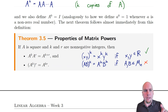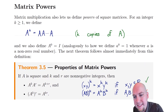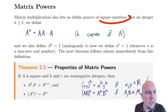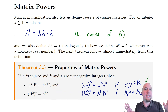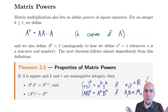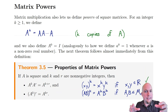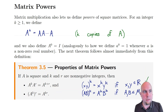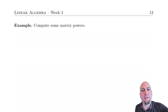One other important point: matrix powers only make sense for square matrices. You can't do this for rectangular matrices, because matrix multiplication doesn't make sense — you need the inner dimensions to match up. In other words, you need the number of rows of A to equal the number of columns of A. It's got to be square.